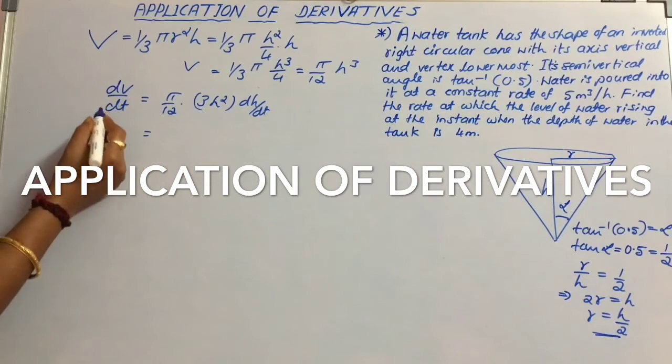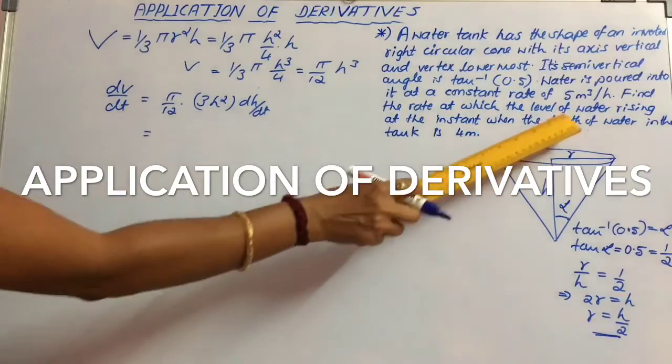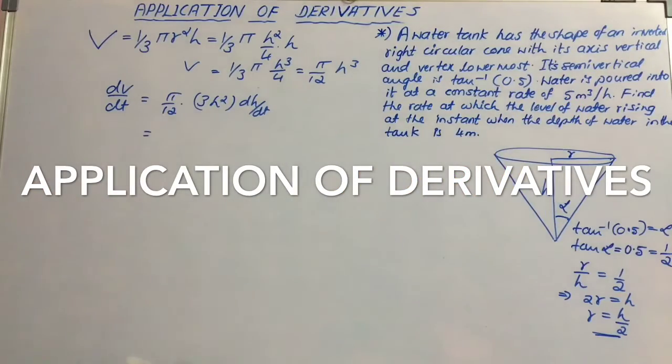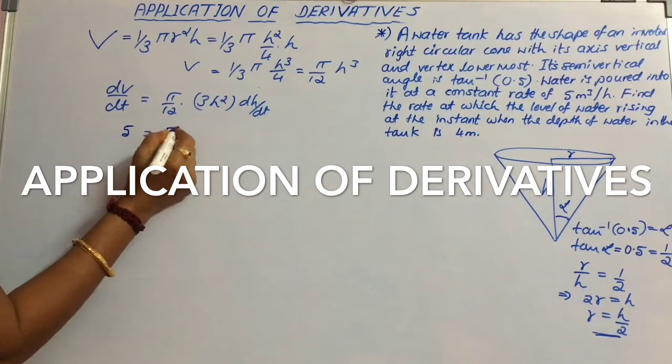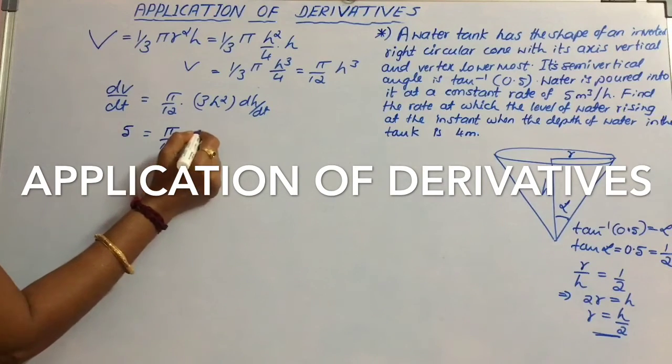that is dV by dt, which is given as 5 cubic meters per hour. So 5 is equal to pi by 12 into 3.